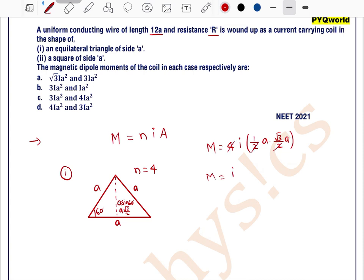This is equal to M equals - this 4 and this 4 get cancelled out - I A square root 3.